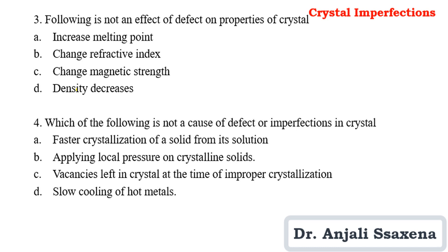Question 3 asks about the effects of crystal imperfections. Options include: increase melting point, change refractive index, change magnetic strength, and density decreases. After crystal imperfection, the melting point always decreases — it never increases. Refractive index changes, magnetic strength changes, and density can decrease. So the option 'increase melting point' is NOT an effect of crystal defects. The answer is option A.